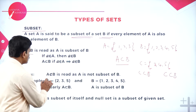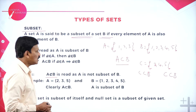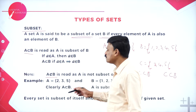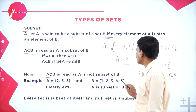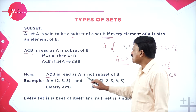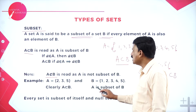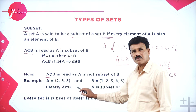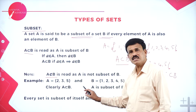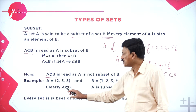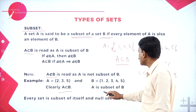The notation A ⊄ B is read as 'A is not the subset of B.' For example, if A = {2, 3, 5} and B = {1, 2, 3, 4, 5}, then 2, 3, and 5 are all elements of set B. Therefore, A is the subset of B. All elements of A must be elements of set B for A to be a subset.